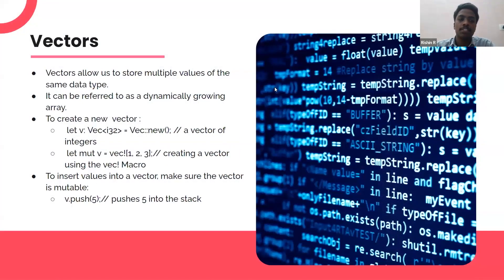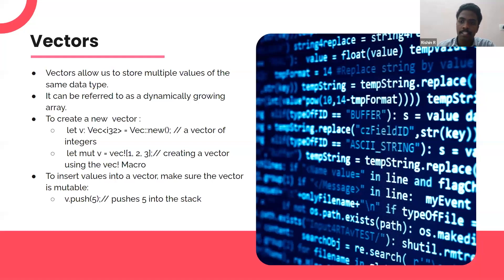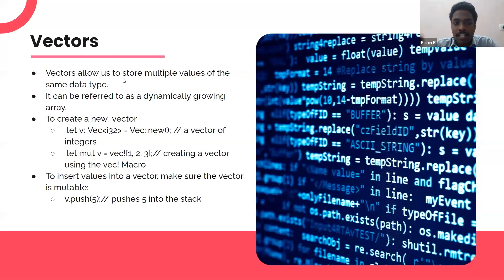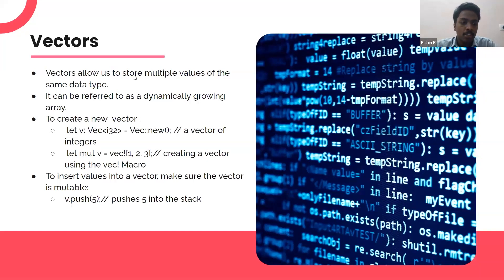What is a vector? The basic definition is a dynamic array — an array whose size can be changed at any point during program execution. Vectors allow us to store multiple values of the same data type, similar to an array, but it can grow. It can be referred to as a dynamically growing array.